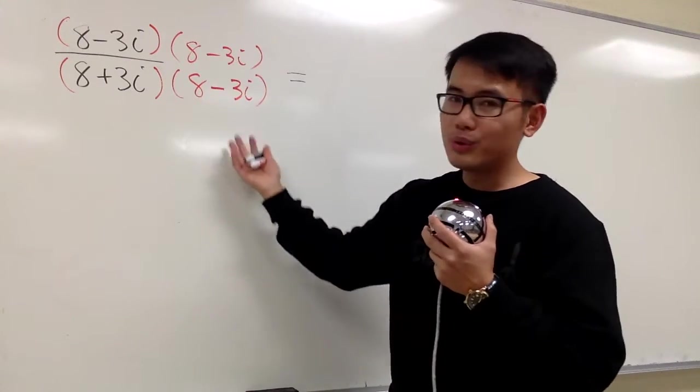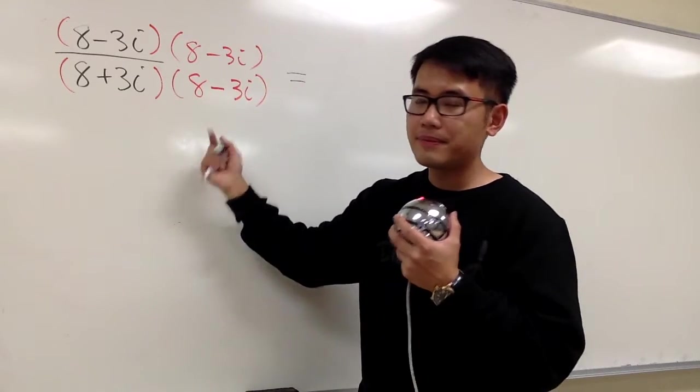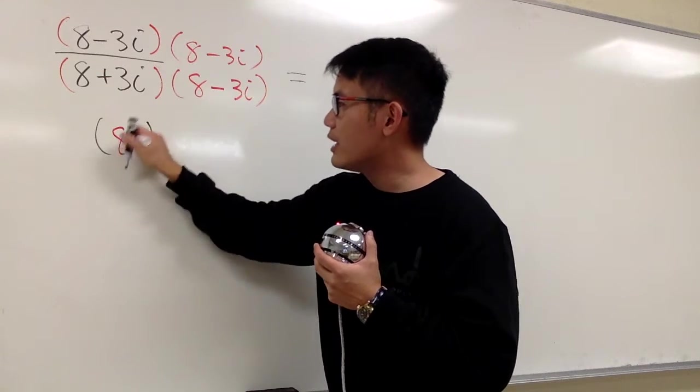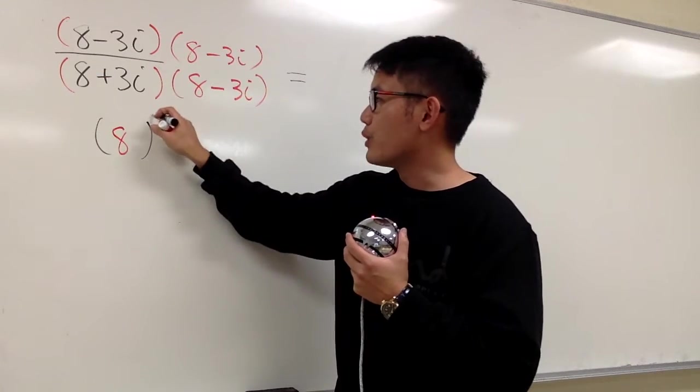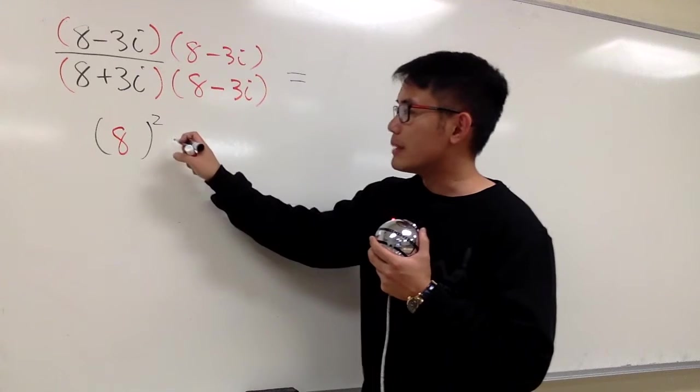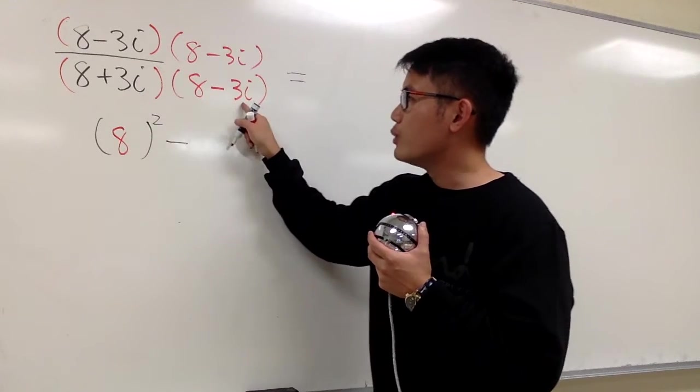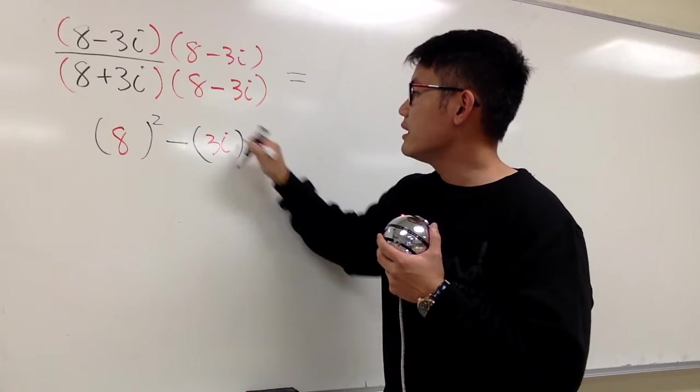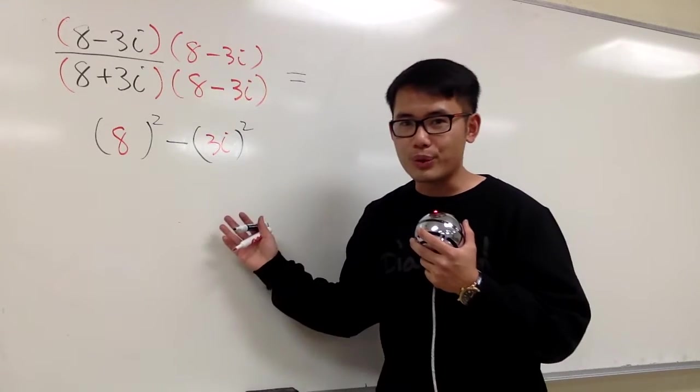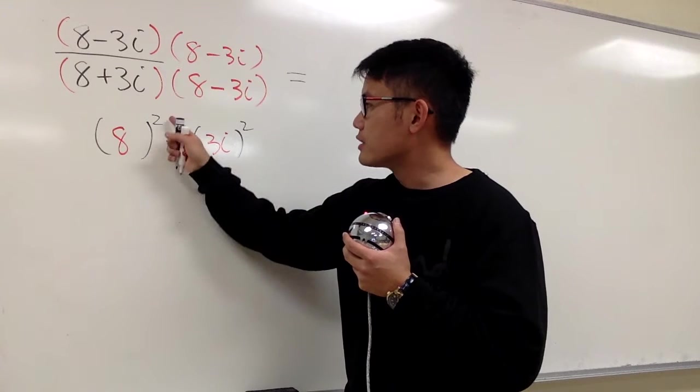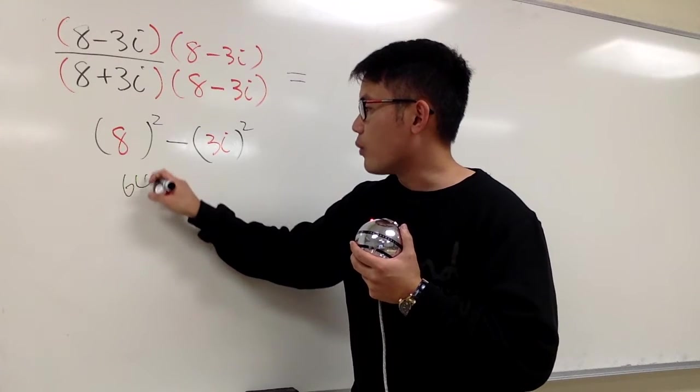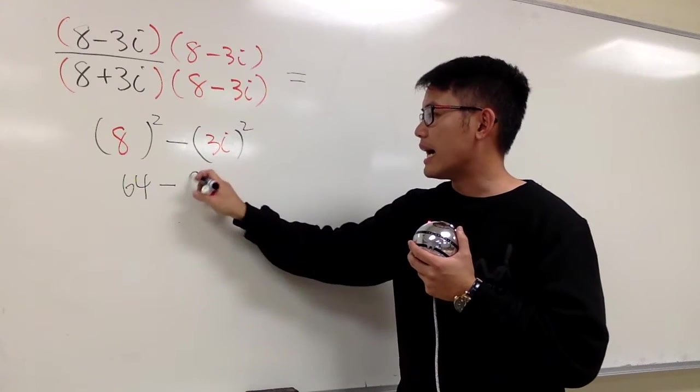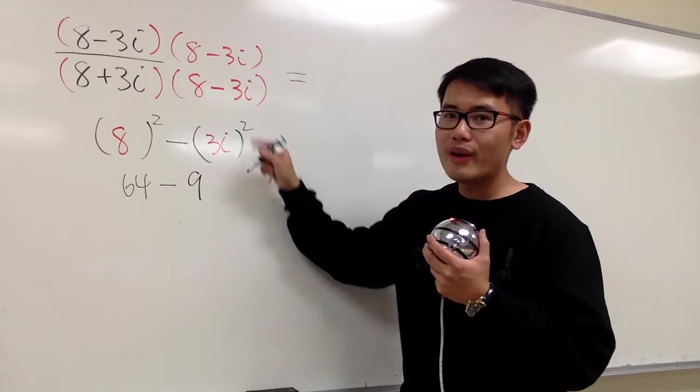The easy way to do this is that I will look at the first term, which is 8. I'll put that in the parentheses and square that. And then we'll subtract the second term, which is the 3i. We will put this in the parentheses and square that. Let's work this out. 8 squared is 64, and then we have minus. 3 squared is 9, but then we have i squared as well.